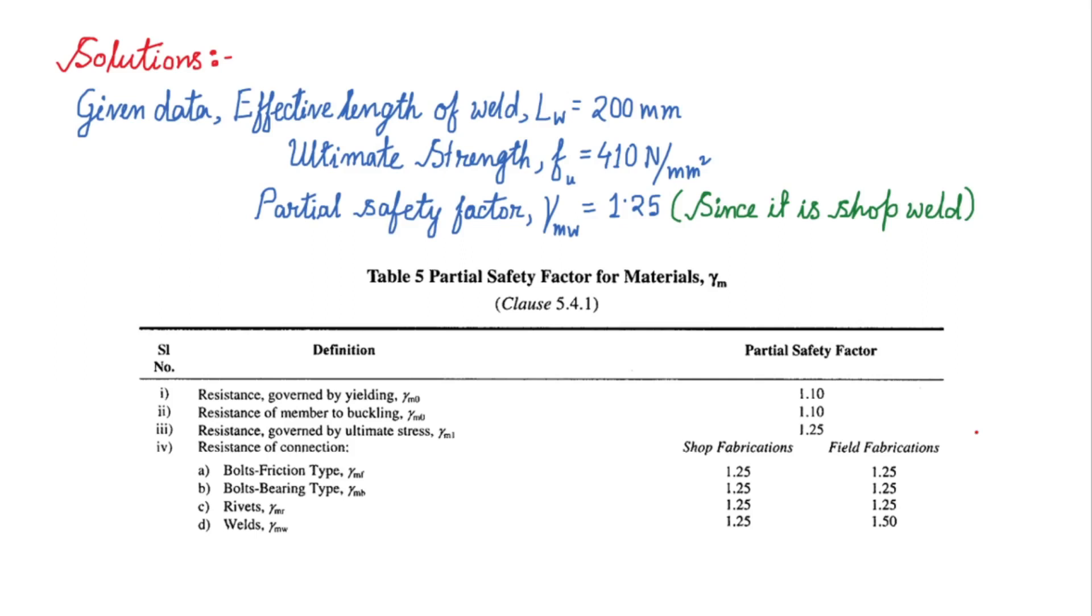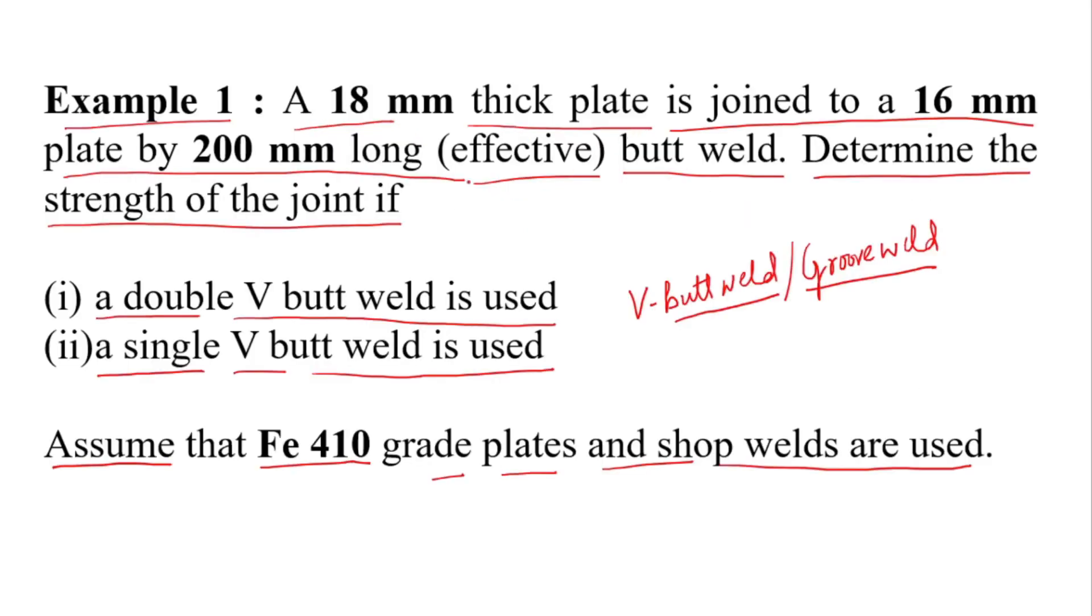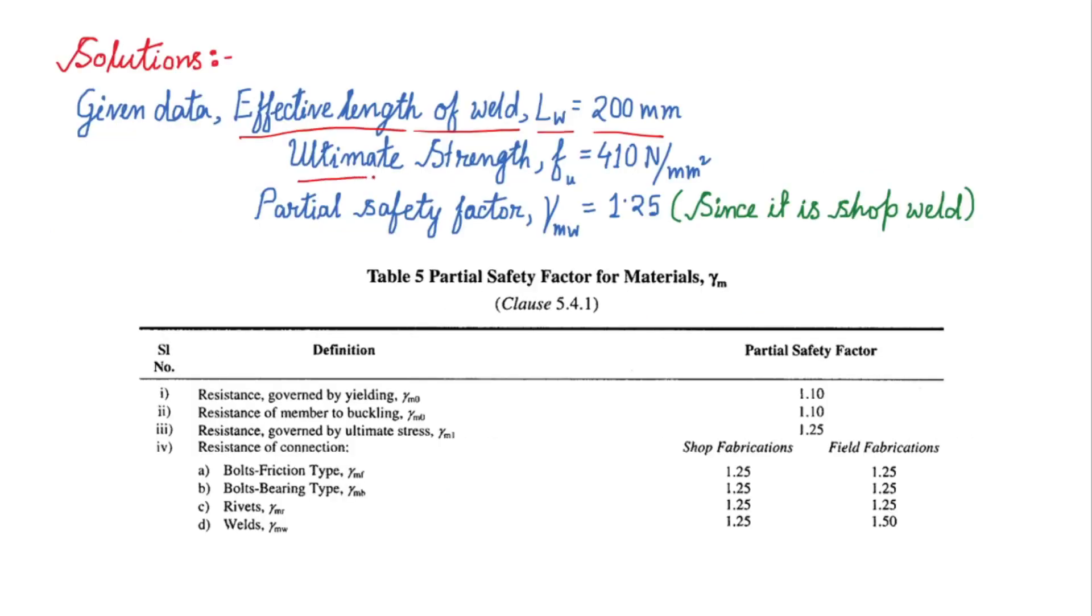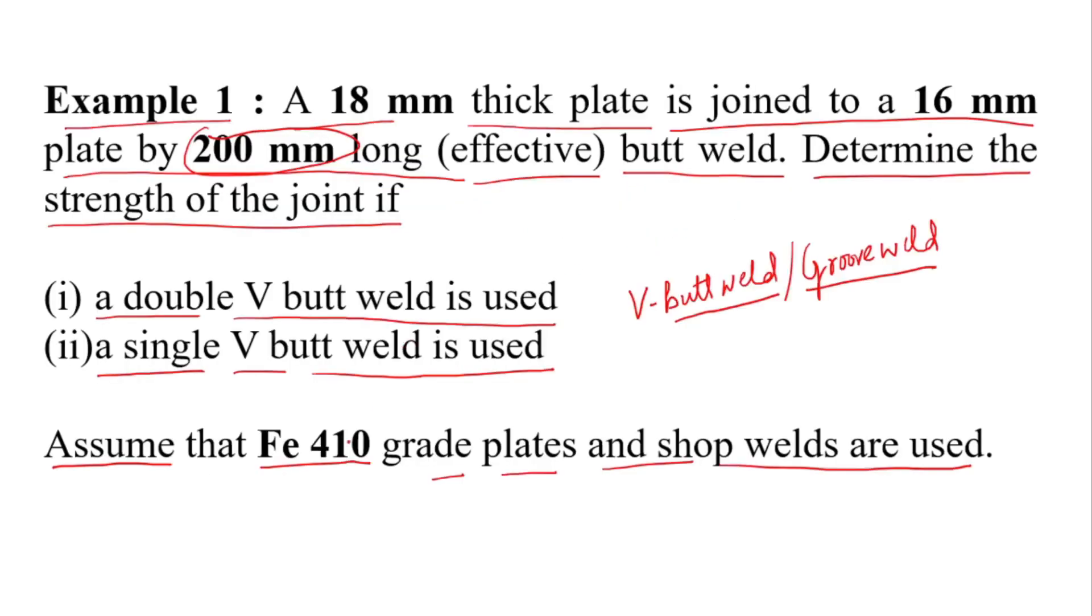First of all, I shall write down the given data like our previous problems. So effective length of the weld which is given in the question 200mm. This is the effective length given in the question. Then ultimate strength Fu 410 Newton per mm square as the grade of the plate is Fe410.